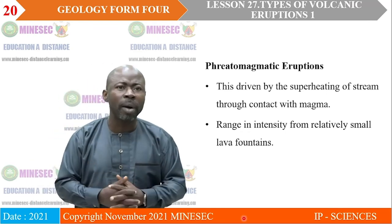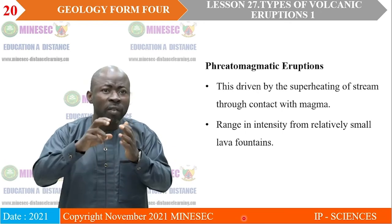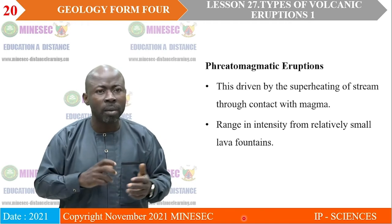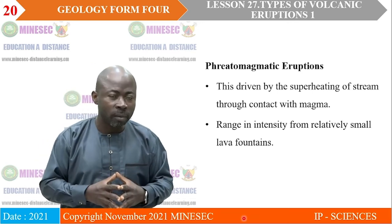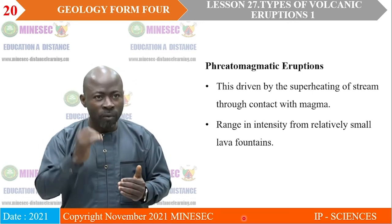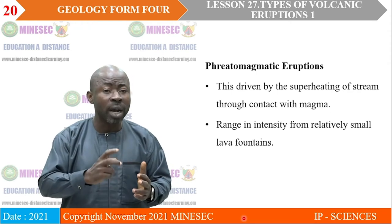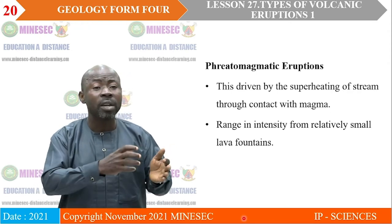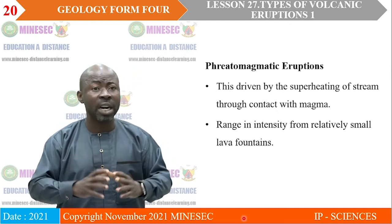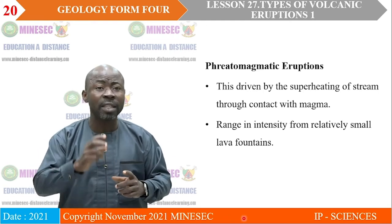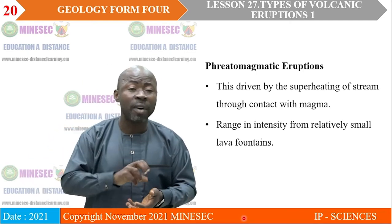For phreatomagmatic eruptions, this criteria looks at eruptions driven by the superheating of steam through contact with magma. The range of intensity goes from relatively small lava fountains to very large lava fountains. The key thing here is the superheating of steam with magma, and intensity ranges from small to larger lava fountains.